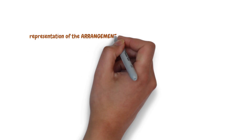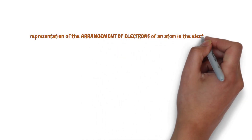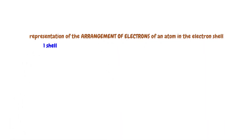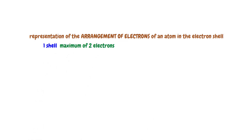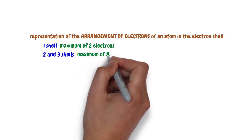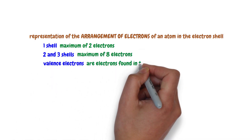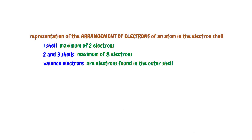To recap: electrons orbit the nucleus in electron shells. Electronic configuration is the representation of the arrangement of electrons of an atom in the electron shell. The first shell can contain up to a maximum of two electrons. The second and third shells can contain up to a maximum of eight electrons. Valence electrons are electrons found in the outer shell and they determine the chemical properties of an atom.